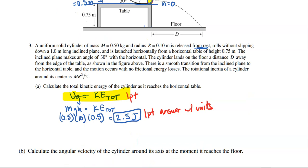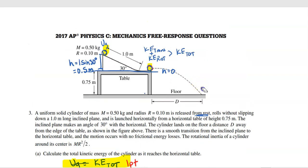For part B, we need to calculate the angular velocity of the cylinder around its axis at the moment it reaches the floor. We want to find omega at that point. The problem says it rolls without slipping, so there is static friction on the incline and it has both linear and angular velocity when it reaches the top of the table.